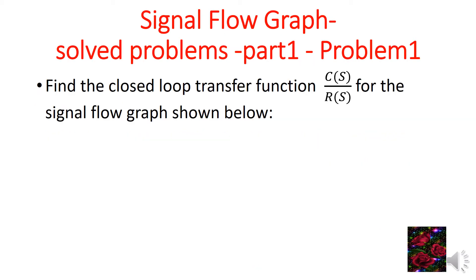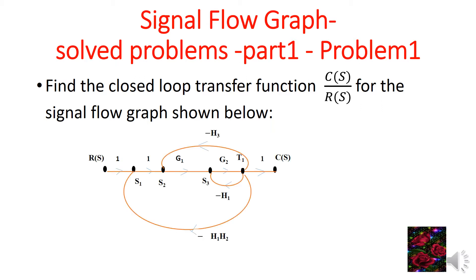Problem 1: Find the closed-loop transfer function C(s)/R(s) for the signal flow graph shown below. Here is a representation of the signal flow graph. For this signal flow graph we have to calculate the closed-loop transfer function C(s)/R(s). The input signal R(s) is applied to summing point S1, from that the signal is applied to S2, then to S3, and from S3 the signal is applied to T1 and taken out as C(s). Each path has its own path gain as indicated in this signal flow graph.